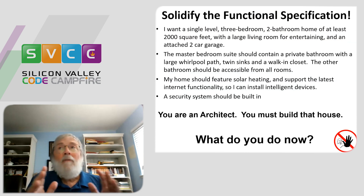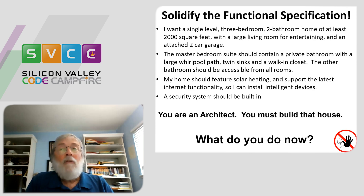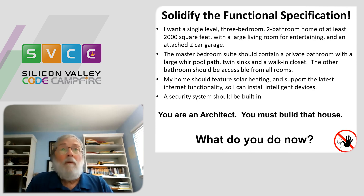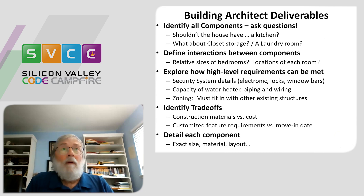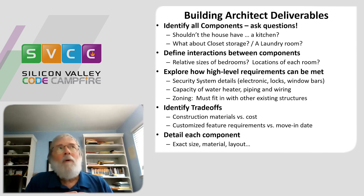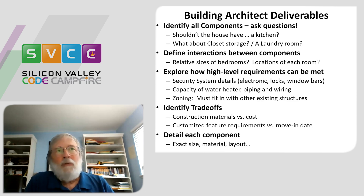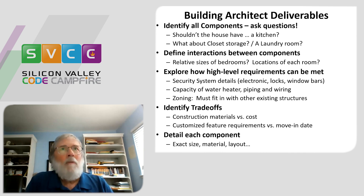So you're an architect with the functional specification — you have to build that house. What is the first thing that you do? Well, you need to identify the actual components. The functional specification is usually from the point of view of the customer, not the implementer. Your job as the architect is to translate that set of instructions from the customer into something that the implementers can build.